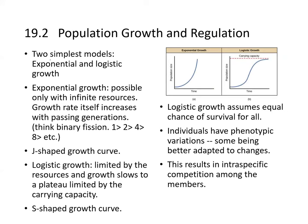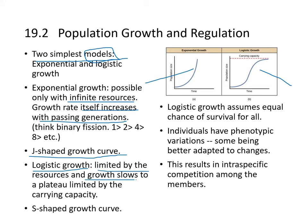There are two models for population growth: exponential and logistic. Exponential growth is possible only with infinite resources — the growth rate itself increases as population increases, like binary fission: one becomes two, two becomes four, producing a J-shaped curve. Logistic growth is limited by resources; growth slows to a plateau due to carrying capacity, showing an S-shaped curve.